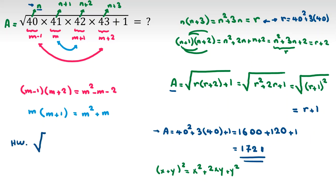Now let me write a homework problem for you: try to calculate the square root of 12345 to one decimal digit. This is important in many exams without a calculator. If you want to learn how, send a message to my WhatsApp number in the description. Please subscribe, turn on the bell, and like the video. Thanks, see you next time!